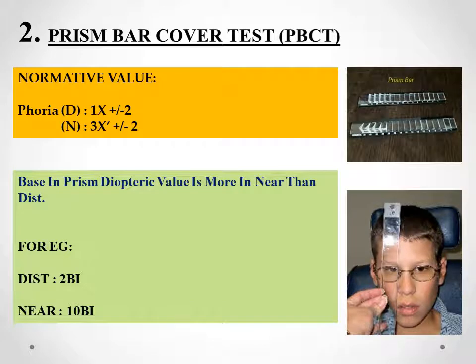The next test to perform is the prism bar cover test to evaluate the degree of exodeviation. In convergence insufficiency, the near exophoria is more than that of the distance. The normative value is 1 diopter exophoria at distance with a standard deviation of plus minus 2, and 3 diopter exophoria at near with a standard deviation of plus minus 2. In convergence insufficiency, you may get a reading like 2 prism diopter base-in at distance and 10 prism diopter base-in at near, giving a hint of convergence insufficiency.